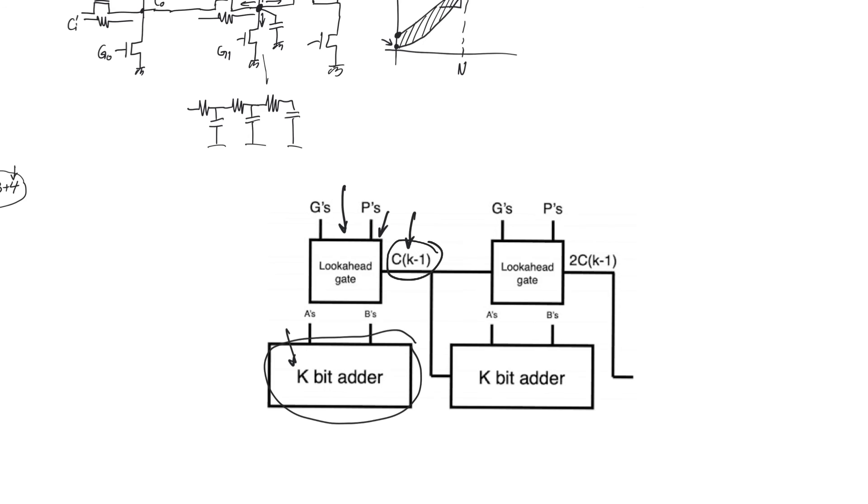This very last position can then be fed into the next k bits, the next block of k bits. This allows this block of k bits to start calculating soon. So we don't have to wait for the outputs from the whole ripple carry adder for the next block of 5 bits to start calculating.